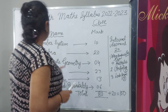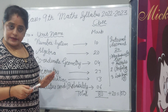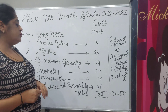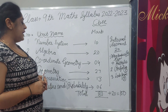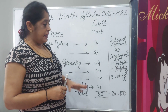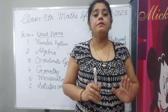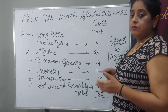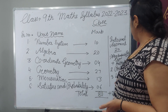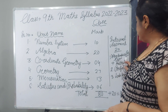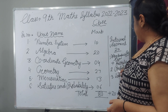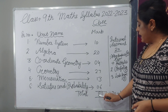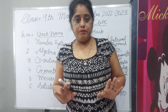Number system is 10 marks, algebra 20 marks, coordinate geometry 4 marks, geometry 27 marks, mensuration 13 marks, and statistics and probability 6 marks. Total is 80 marks. And 20 marks for internal assessment from the school side — class test or unit test 10 marks, portfolio 5 marks, lab practical 5 marks — making a total of 100 marks.